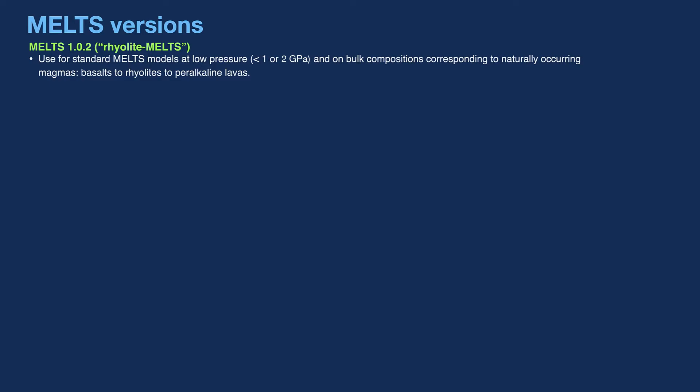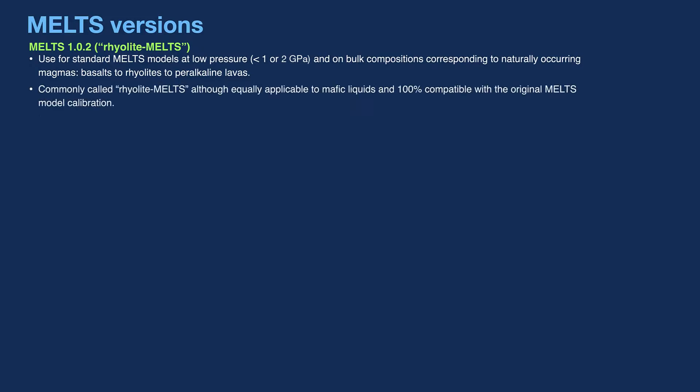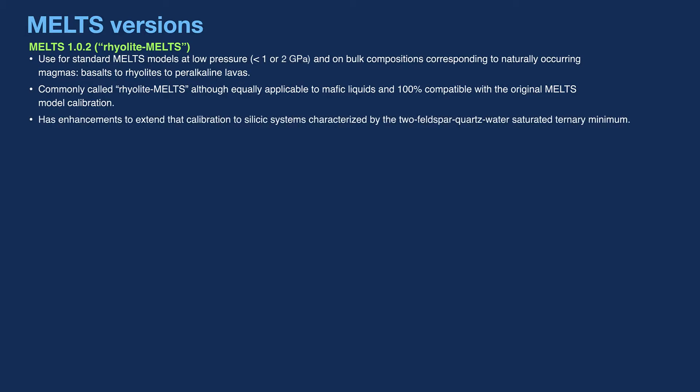Use version 1.0.2 for standard MELTS models at low pressure — that is, less than one or two GPa — and on bulk compositions corresponding to naturally occurring magmas: basalts to rhyolites to peralkaline lavas. Version 1.0.2 is commonly called rhyolite MELTS, although this version is equally applicable to mafic liquids and is 100% compatible with the original MELTS model calibration. Rhyolite MELTS has enhancements to extend that calibration to silicic systems characterized by the two feldspar quartz water-saturated ternary minimum.